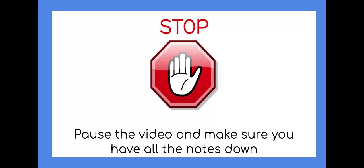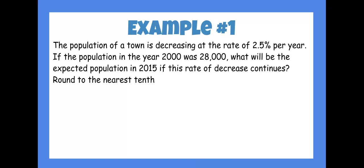Pause the video and make sure you have all the notes down. Let's look at example one: The population of a town is decreasing at a rate of 2.5% per year. If the population in the year 2000 was 28,000, what is the expected population in 2015 if the rate of decrease continues? Round your answer to the nearest tenth.